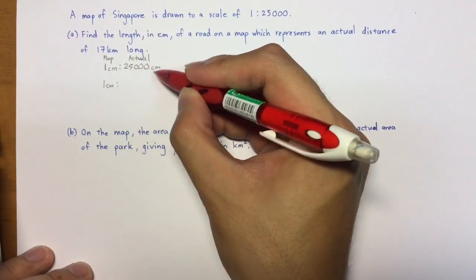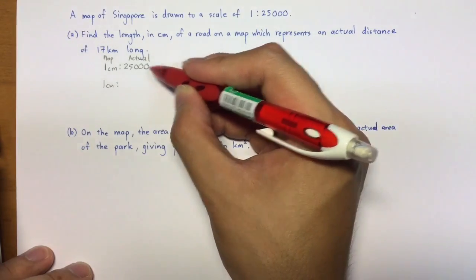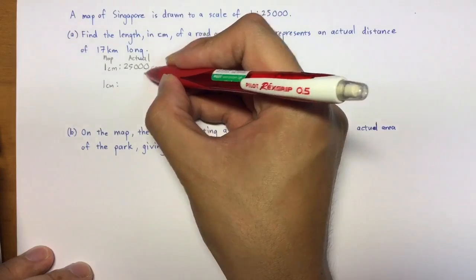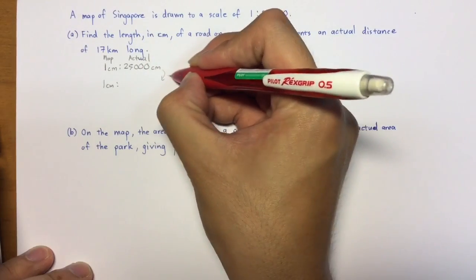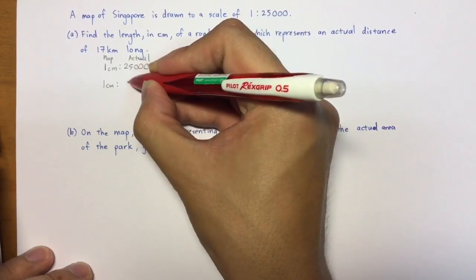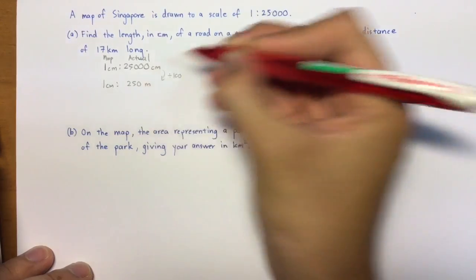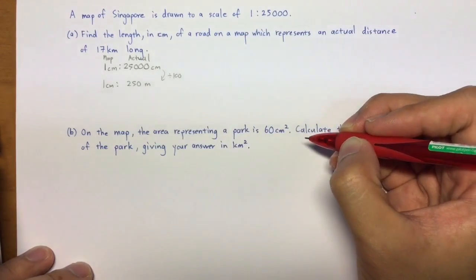Okay, so now I'm going to change the actual value of 25,000 cm to meters first. So first of all, divide by 100, you will get 250 meters.